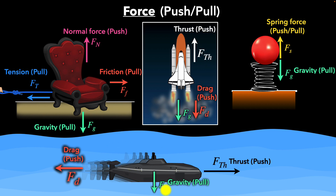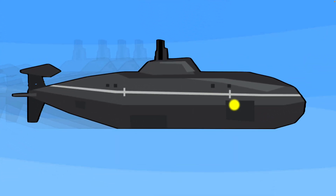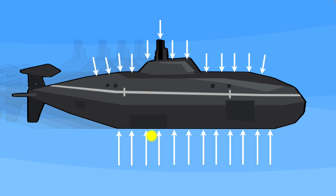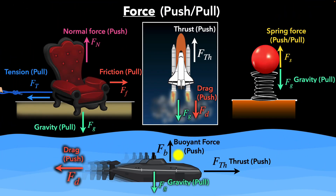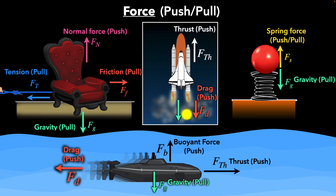Coming back to the submarine, is there any other force? Yes — fluids exert pressure, and that pressure increases with depth. Therefore, the bottom of the submarine experiences slightly higher pressure from the surrounding fluid compared to the top, resulting in a net upward force. That's called the buoyant force. It's a pushing, contact force responsible for making things float. Submarines can control the balance between gravity and buoyant forces by letting water into their tanks or expelling it, allowing them to rise, sink, or maintain a particular depth. A rocket also experiences a buoyant force since air is a fluid, but it's so tiny compared to the other forces that we completely ignore it.